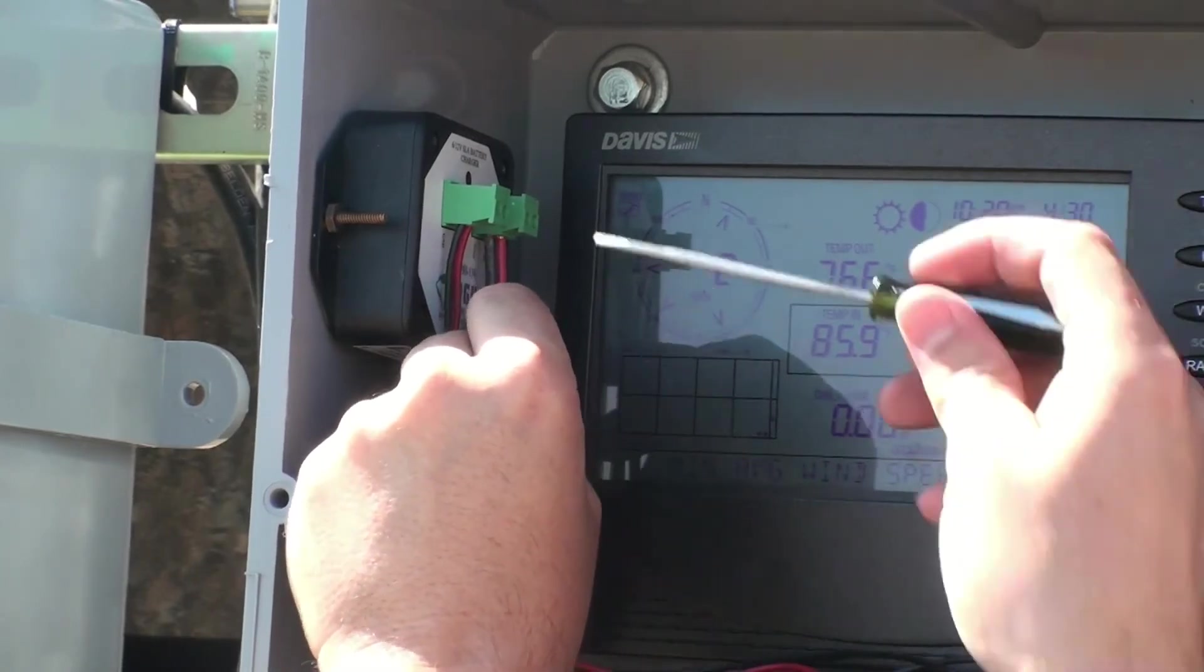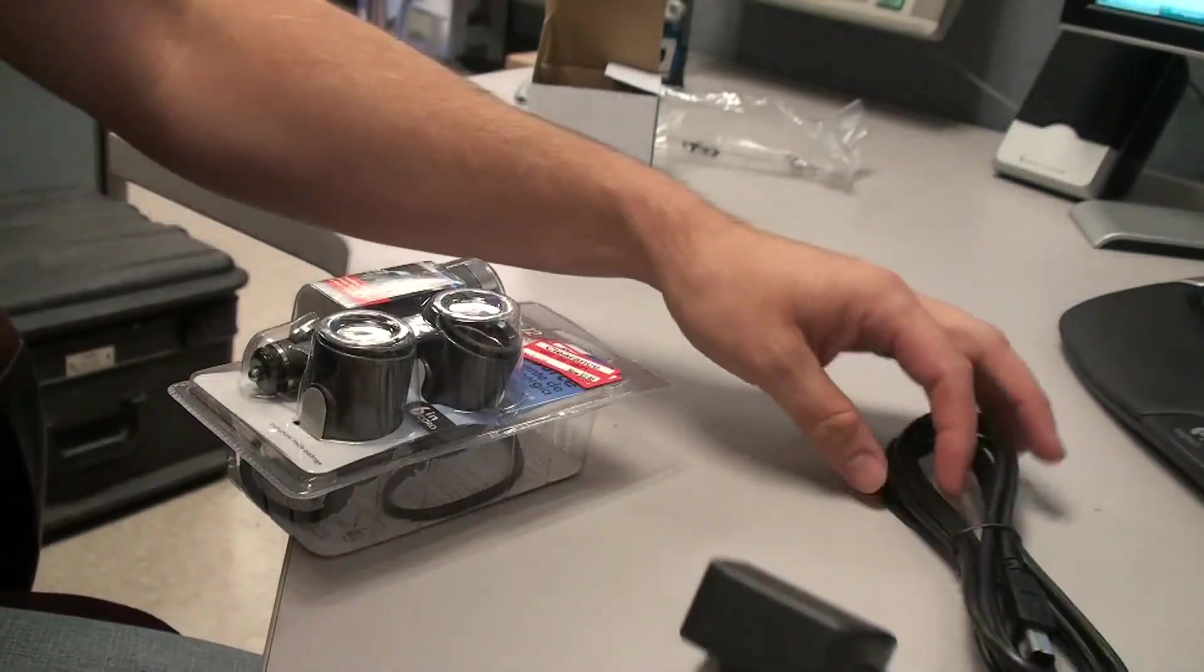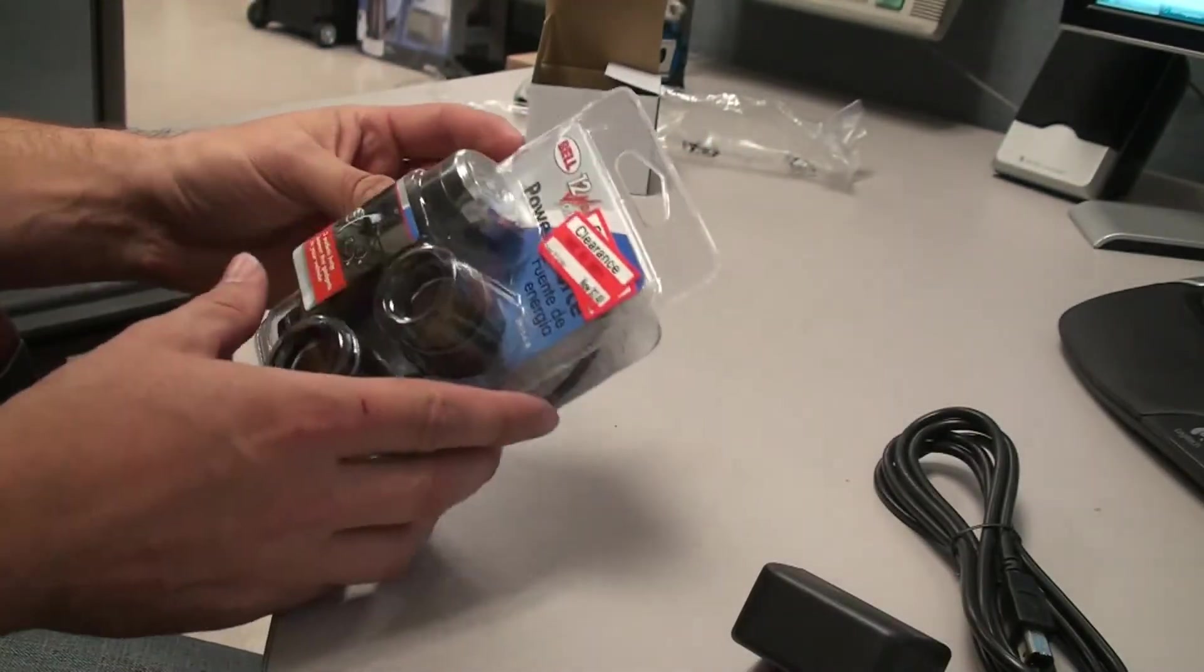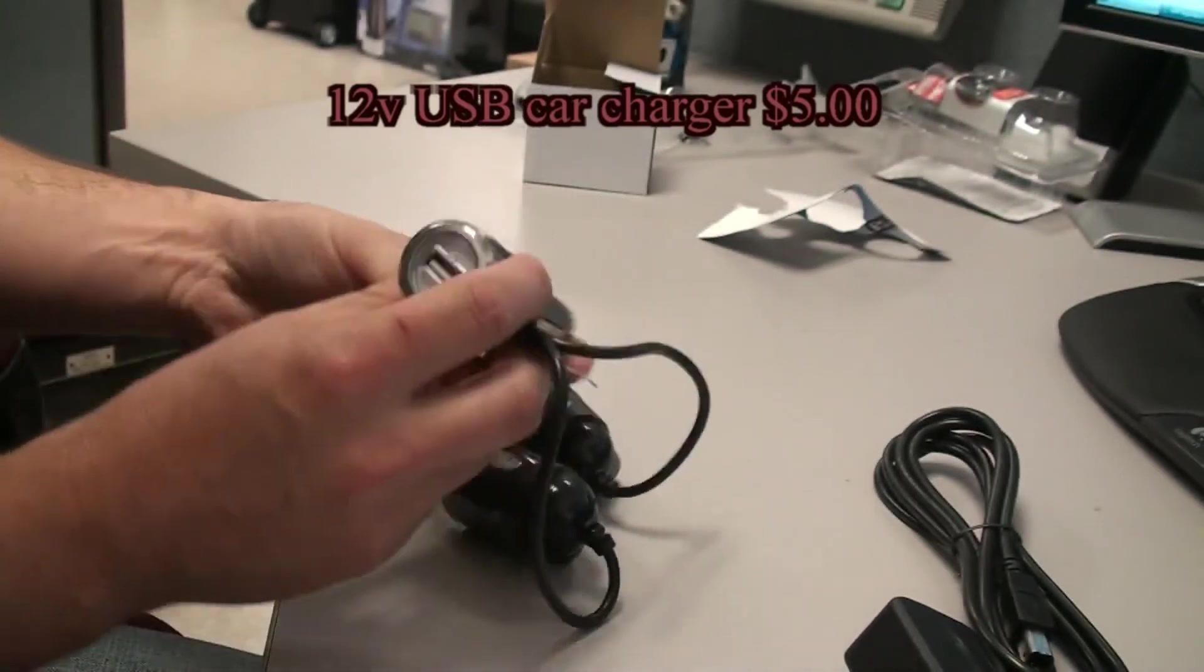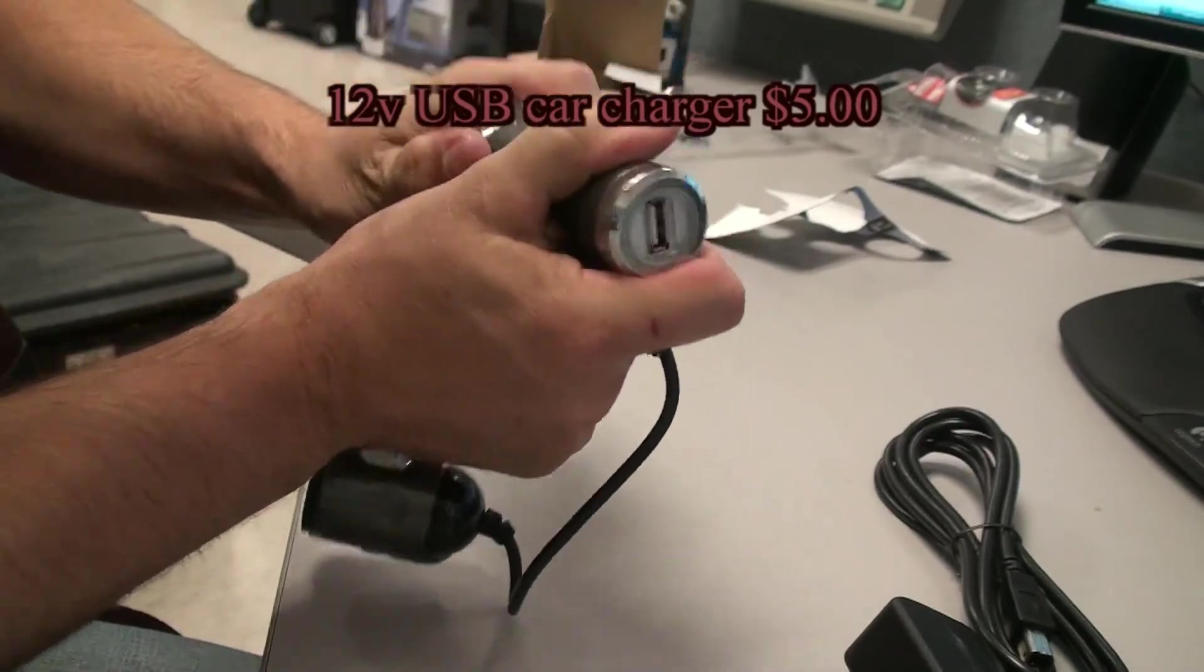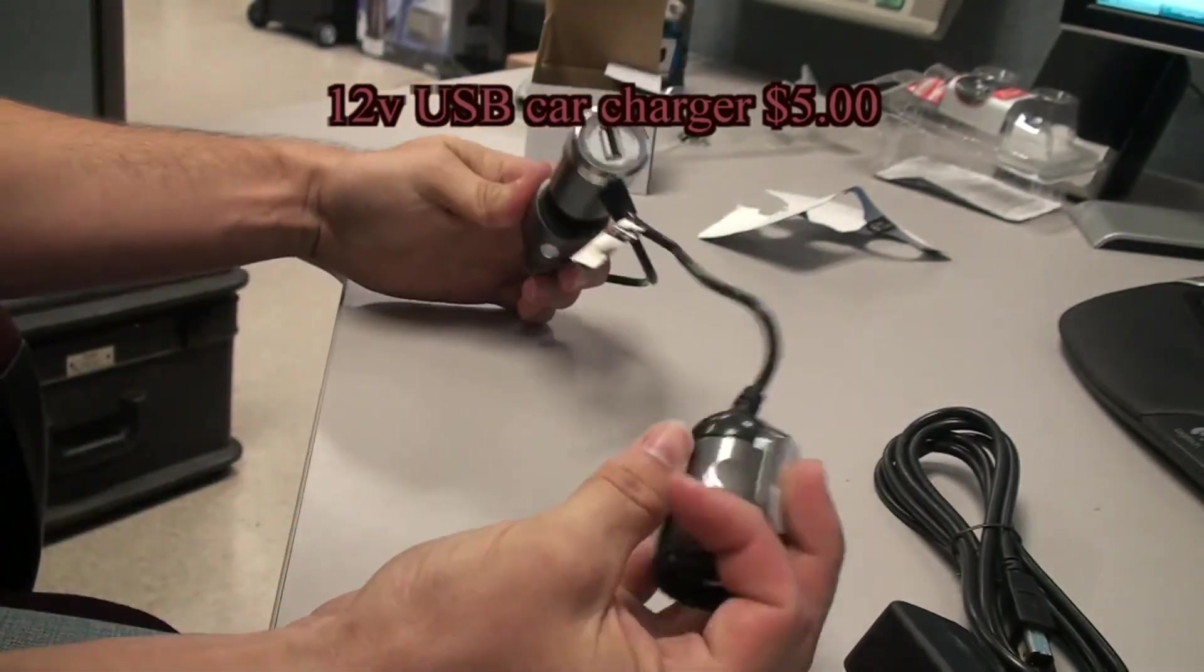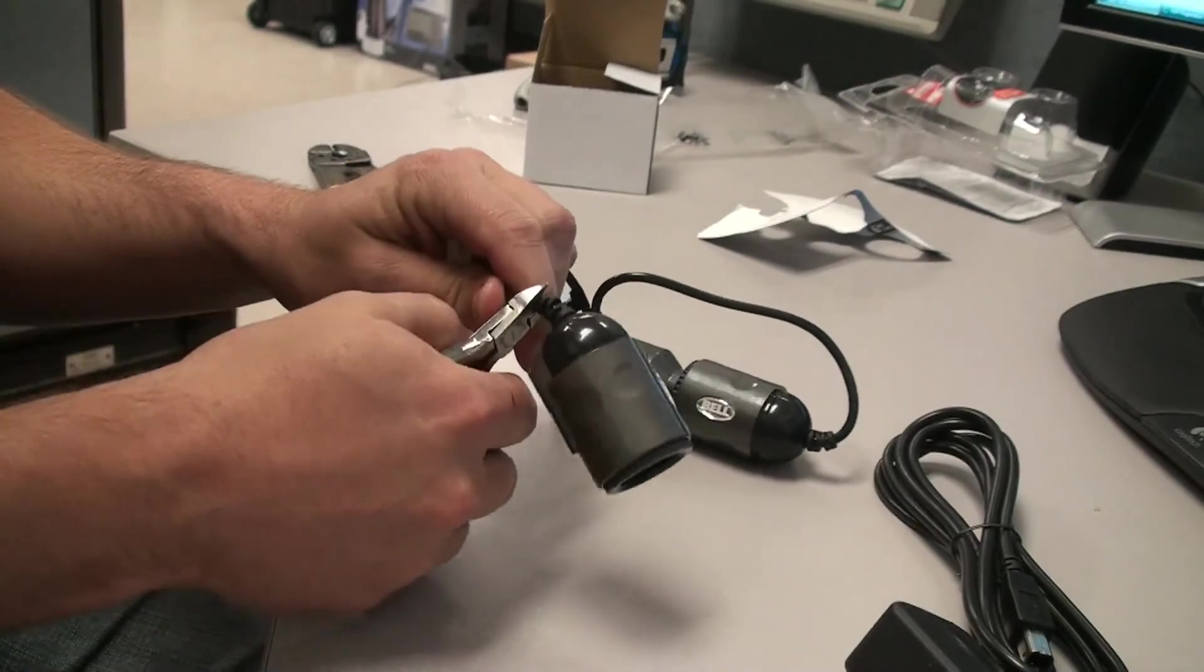If we don't want to be replacing the three C cell batteries in the weather console every couple of months, we'll need to build a 5 volt DC power supply to feed it. The console comes with an AC to DC power supply, which won't work in this kind of remote situation. For this setup, we're going to modify a 12 volt USB car charger to power the console since all USB ports output 5 volts DC just like the console needs.